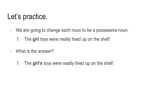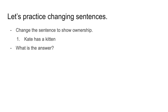Now let's change it up a little bit. Instead of just adding apostrophe S to the end of words, we are going to change the whole sentence to show ownership. Our sentence says: Kate has a kitten. I'll give you a moment to think about how you're going to form your sentence. Our answer is going to be: it is Kate's kitten. We use apostrophe S and change the sentence around a bit, but it means the same thing.